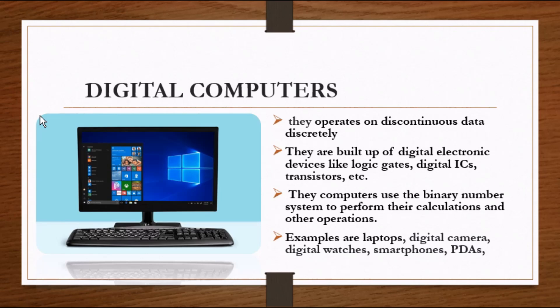their quantities are expressed as discrete numbers. They operate on data discretely. These computers are built up of digital electronic devices like logic gates, digital integrated circuits, and transistors. They use the binary number system to perform their calculations and operations, and are very useful for evaluating arithmetic expressions and manipulation of data.